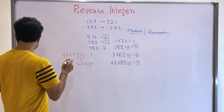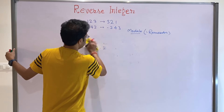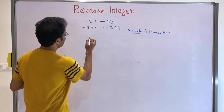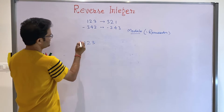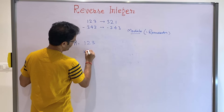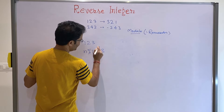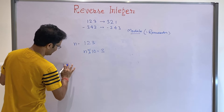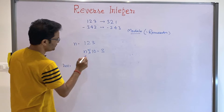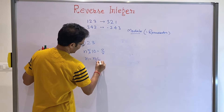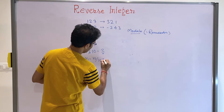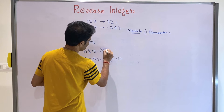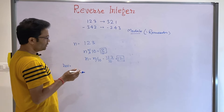Let me explain this for 1, 2, 3. Suppose this is n = 123. What you have to do: take n modulus 10 and you will get 3. Then take one variable — let's call it reverse — initialized to 0. Then you do n = n / 10. When you do 123 / 10, you will get 12 in integer format. So now you have the last digit and the remaining number.